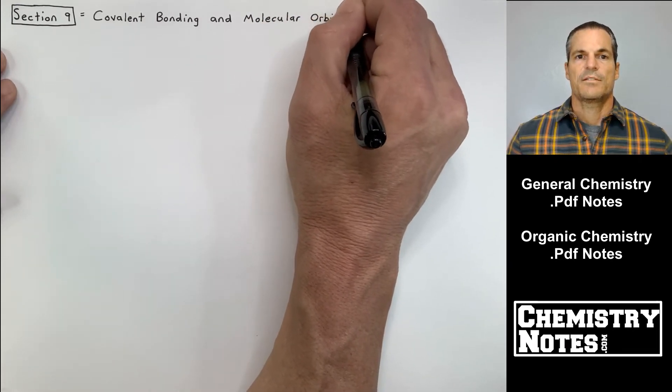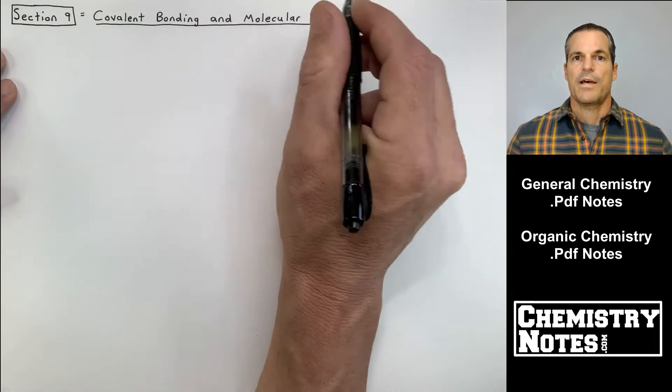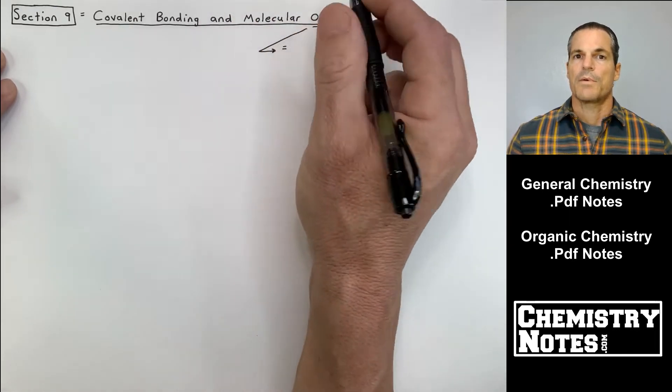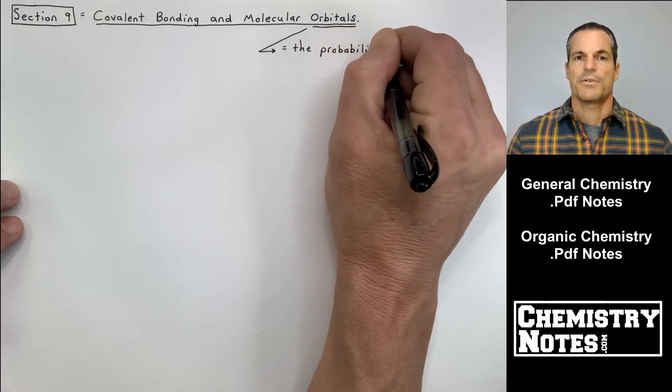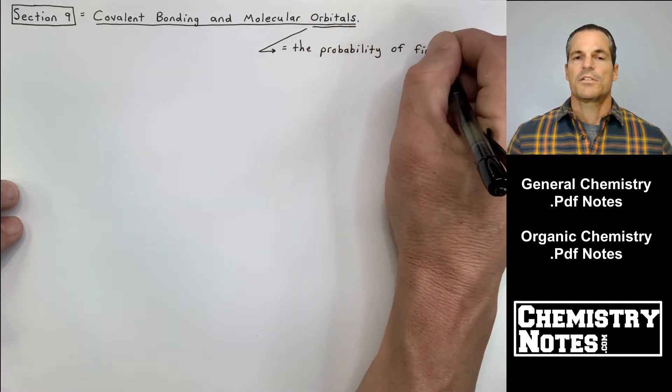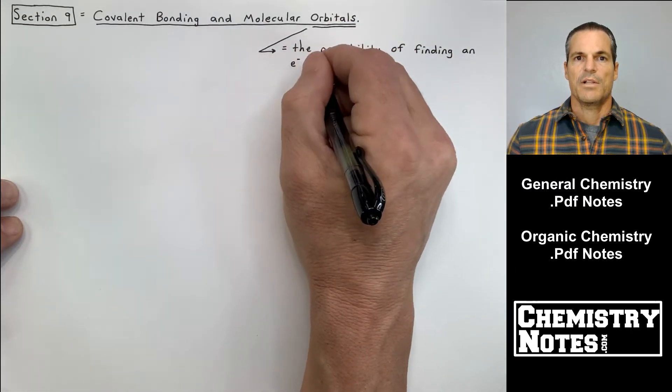This section 9 builds off of section 7 and section 8, where we learned about electron configurations, atomic orbitals, Lewis structures, and molecular geometries. So let's just get started with the notes here. Section 9, covalent bonding and molecular orbitals.